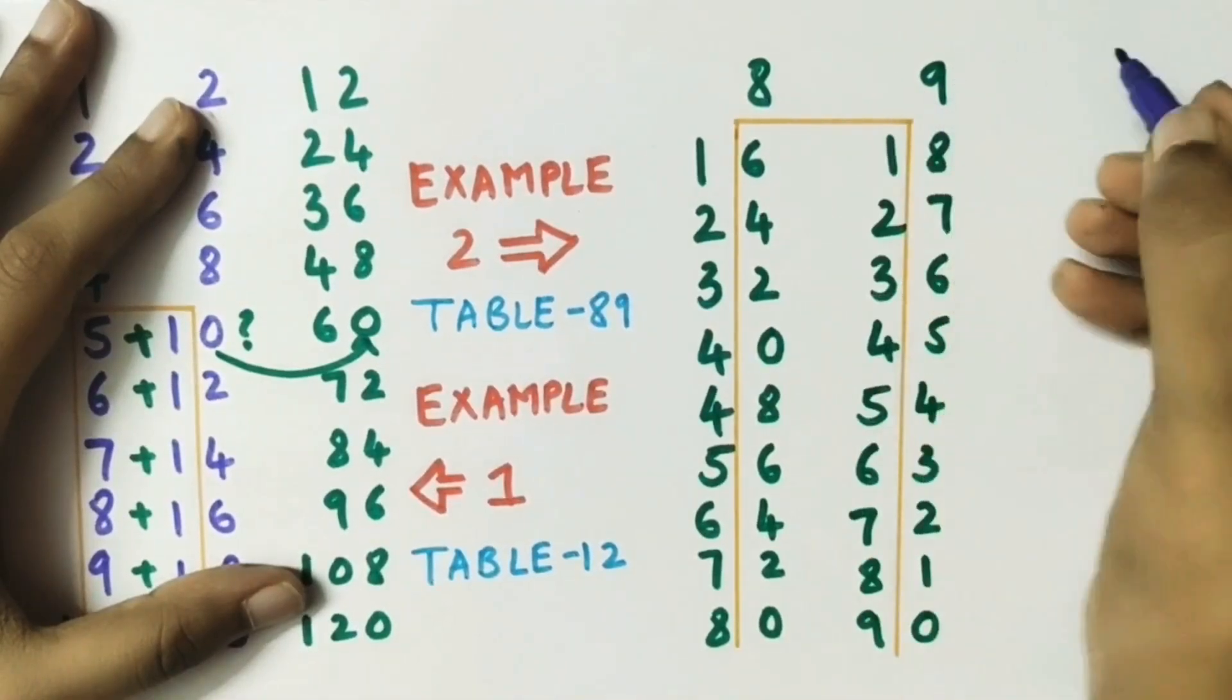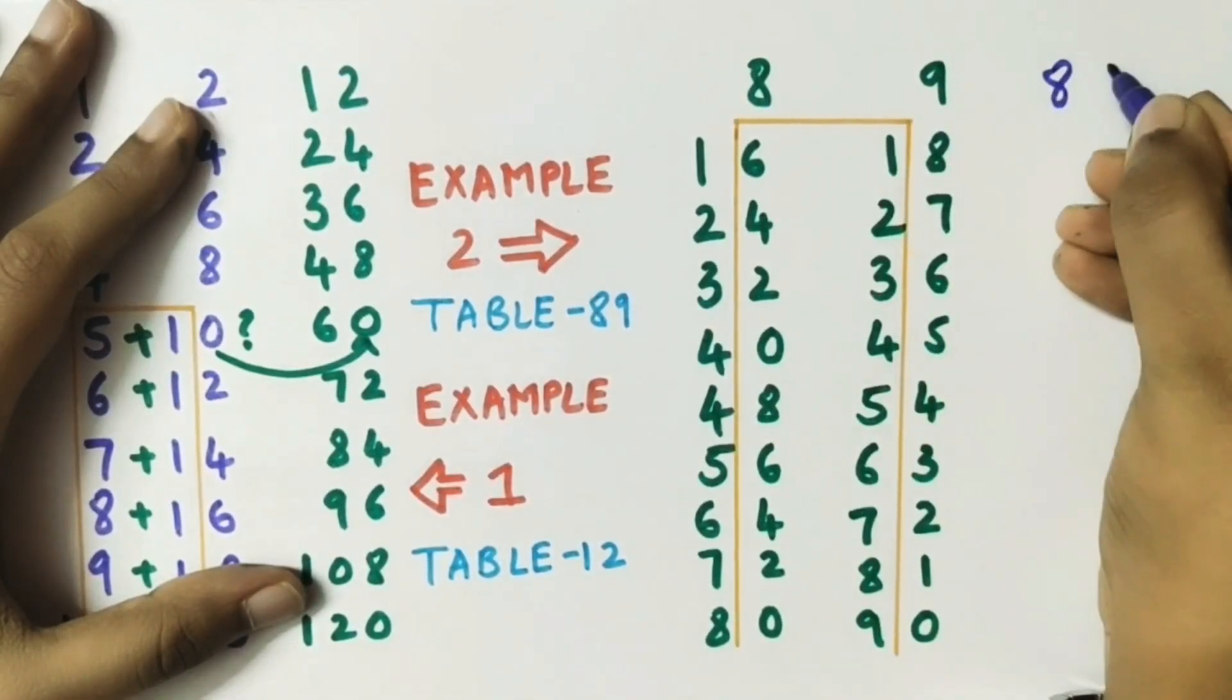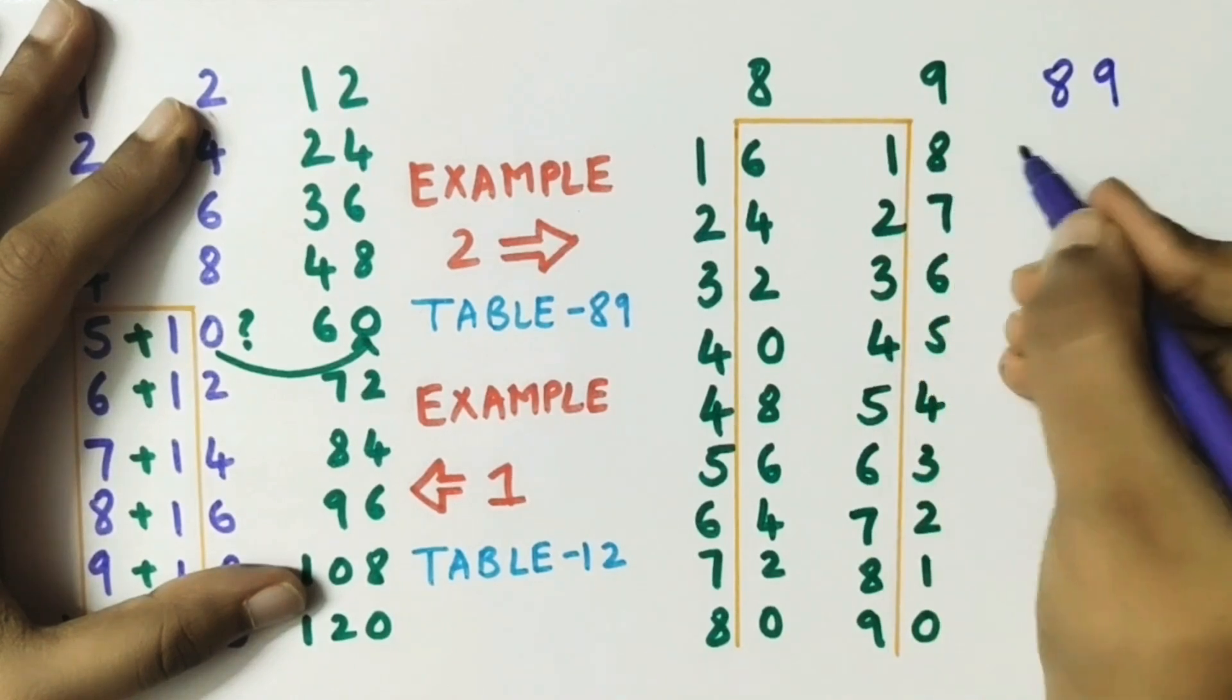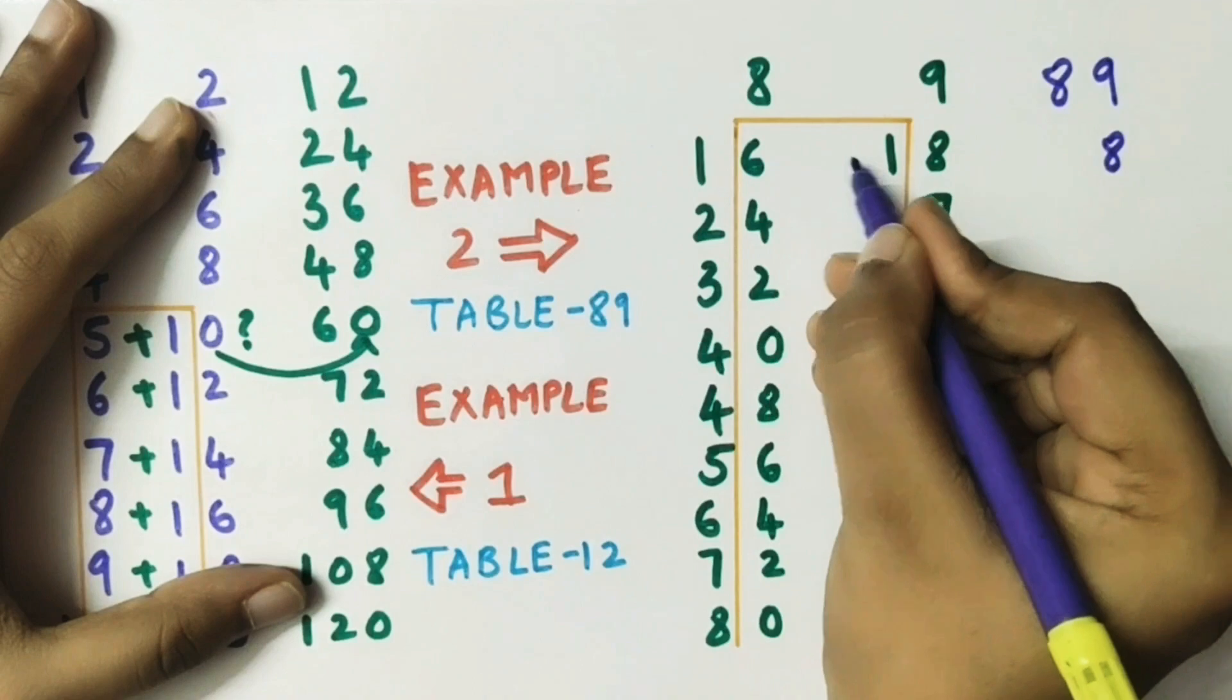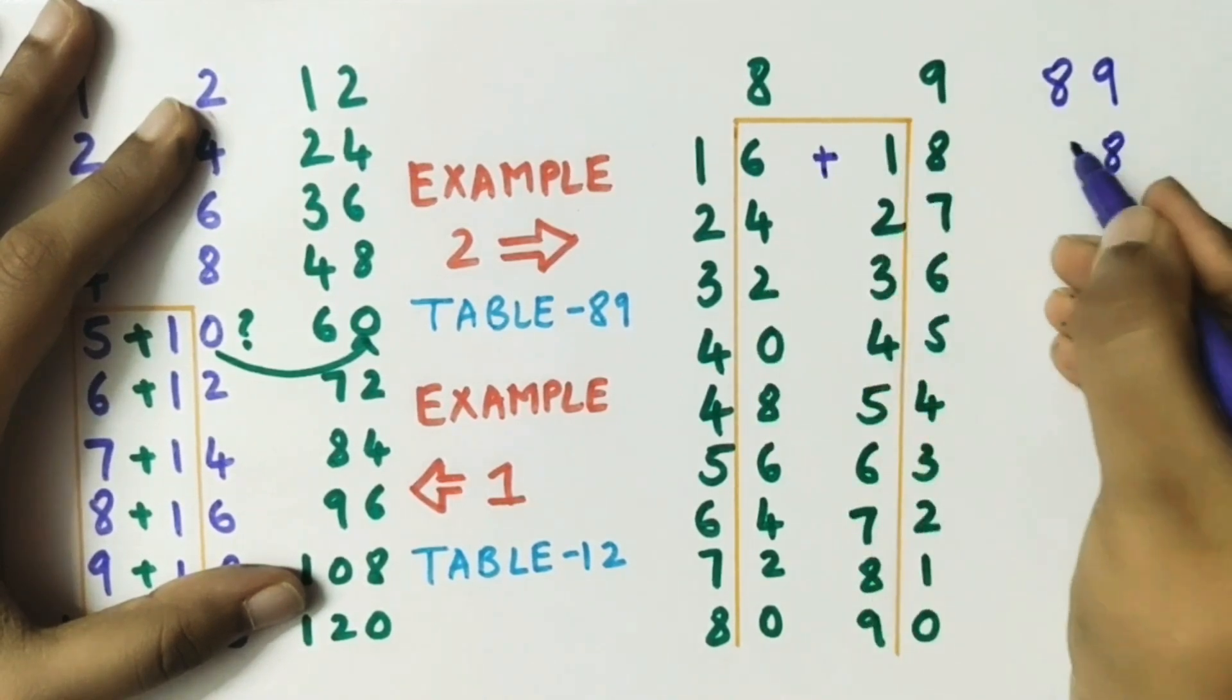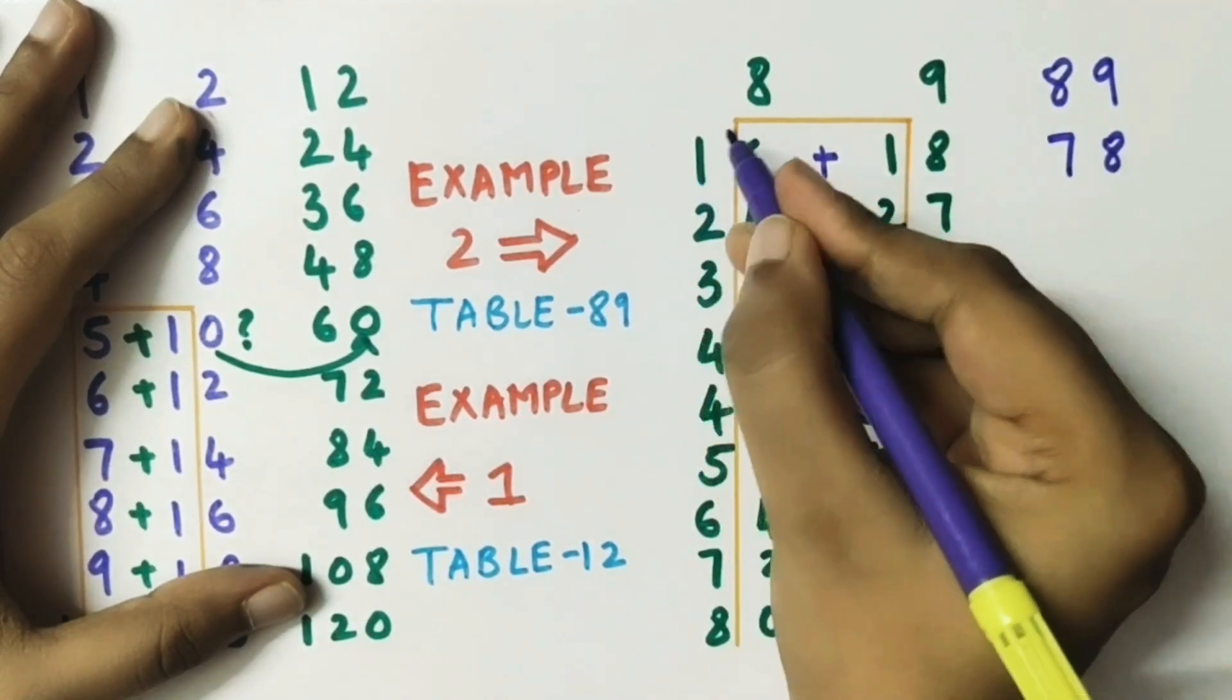Then we will add 6 plus 1, and remaining 1 as it is.